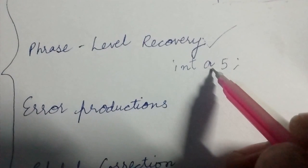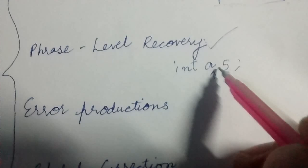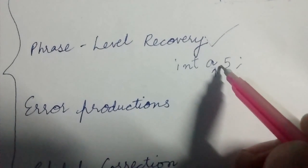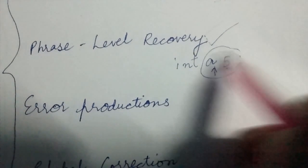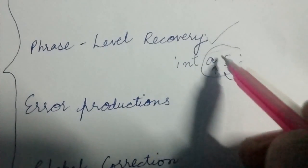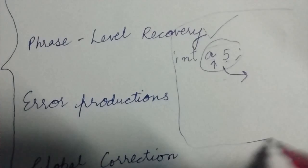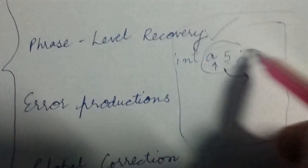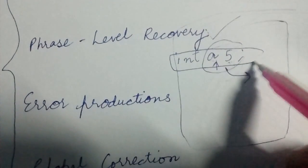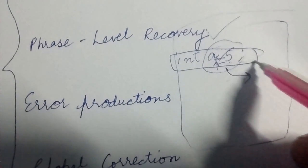We have read till here and after this, 5 is not expected - equals should be there. We have found an error in this particular phrase, so we correct it here only. This is not a kind of global correction, it is kind of local correction. We correct this error and then proceed.